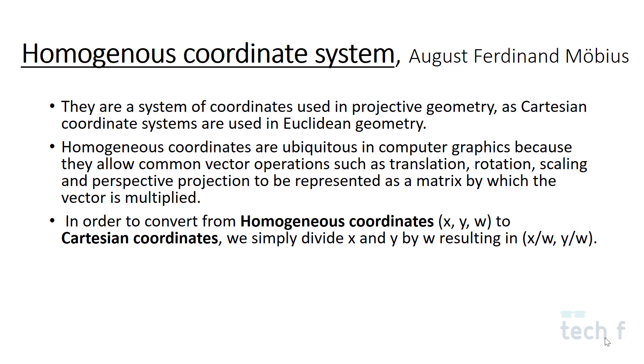These operations are achieved by multiplying a transformation matrix. In order to convert homogeneous coordinates to Cartesian coordinates, we simply divide X and Y by the scalar quantity W.